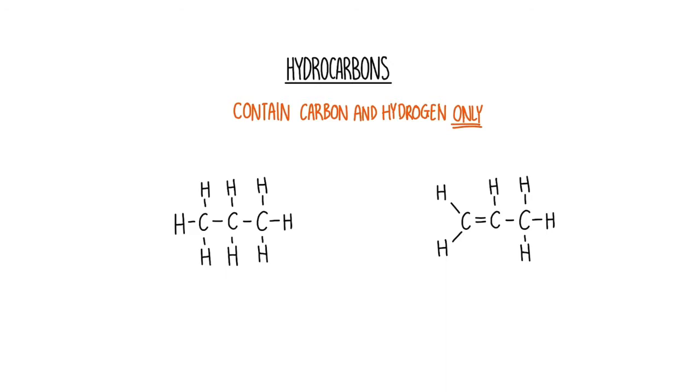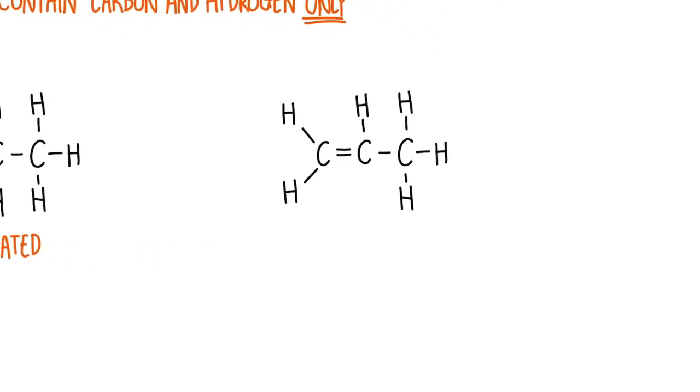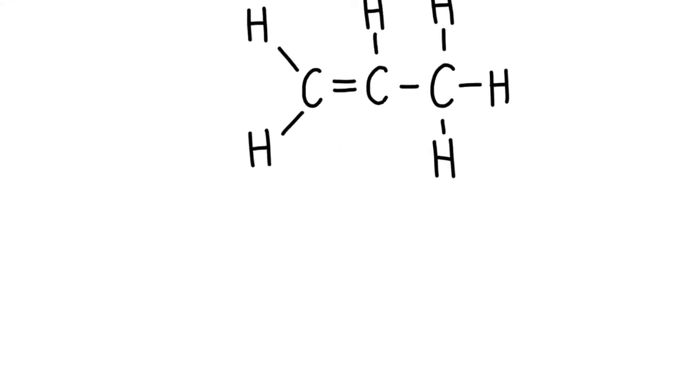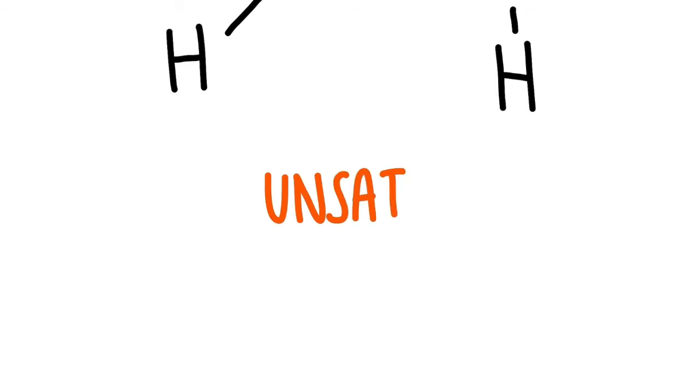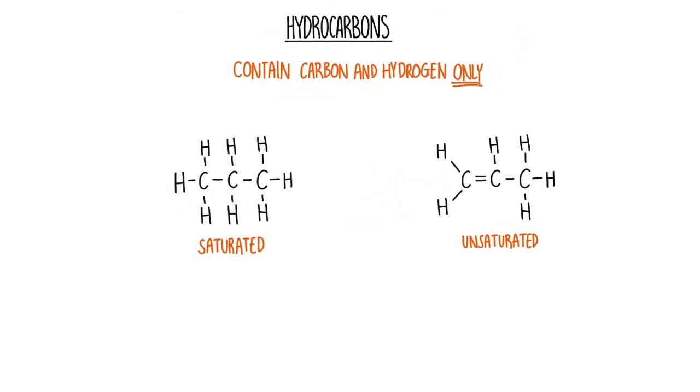When a hydrocarbon is connected by only single carbon bonds, we call that a saturated hydrocarbon. When a hydrocarbon has at least one carbon to carbon double bond, we call that unsaturated. Another word for a saturated hydrocarbon is an alkane, and another word for an unsaturated hydrocarbon is an alkene. We'll talk a little bit more about those in a minute.